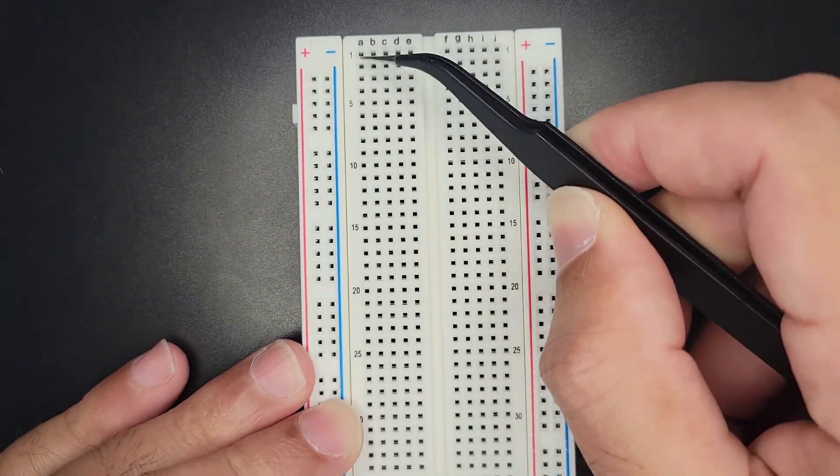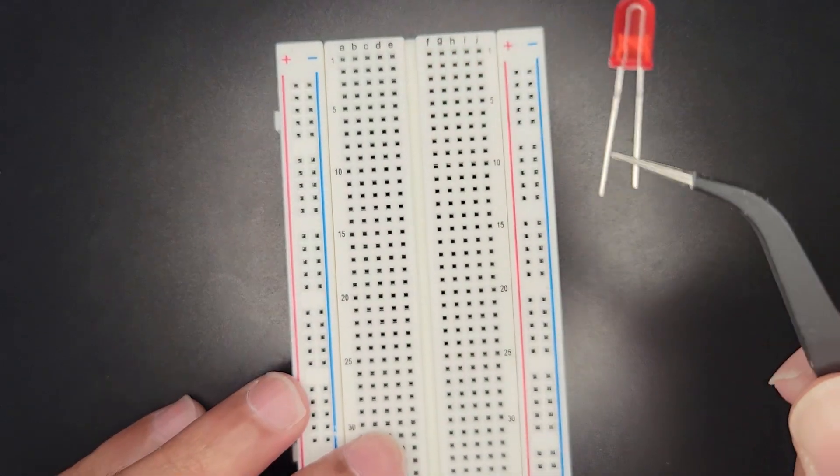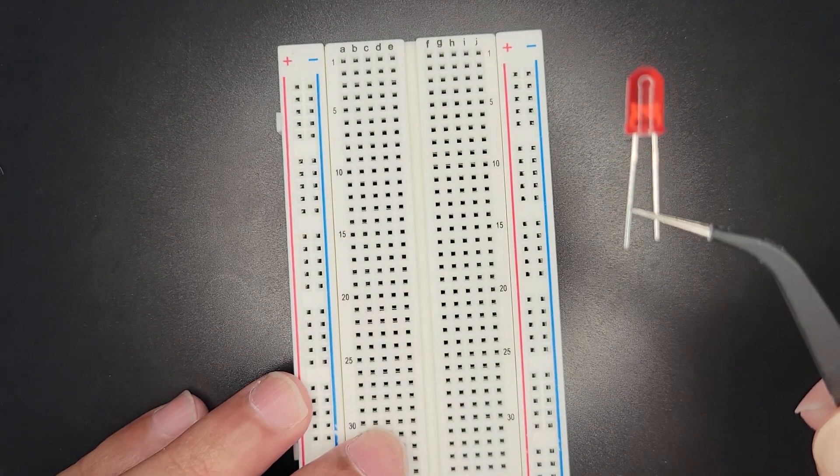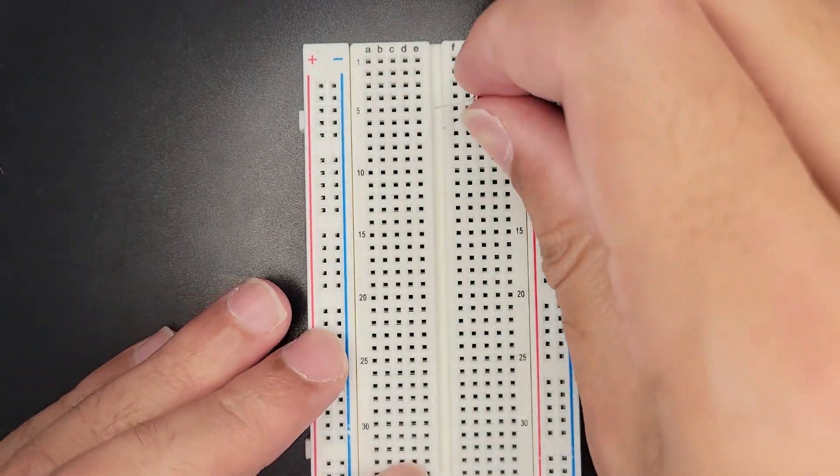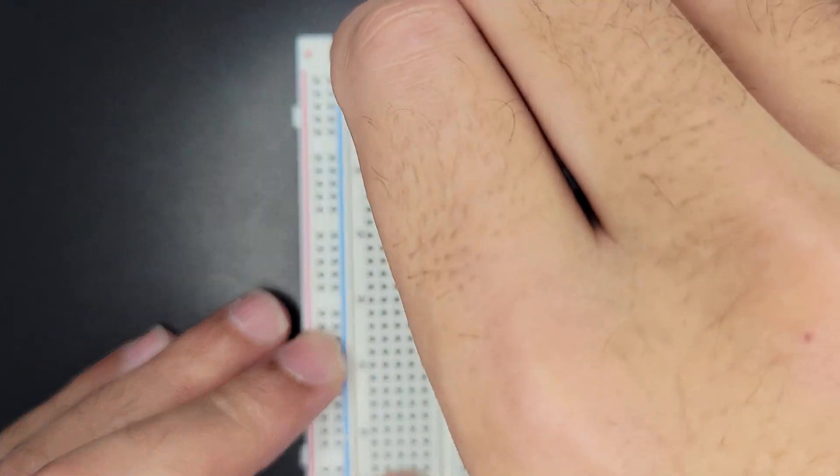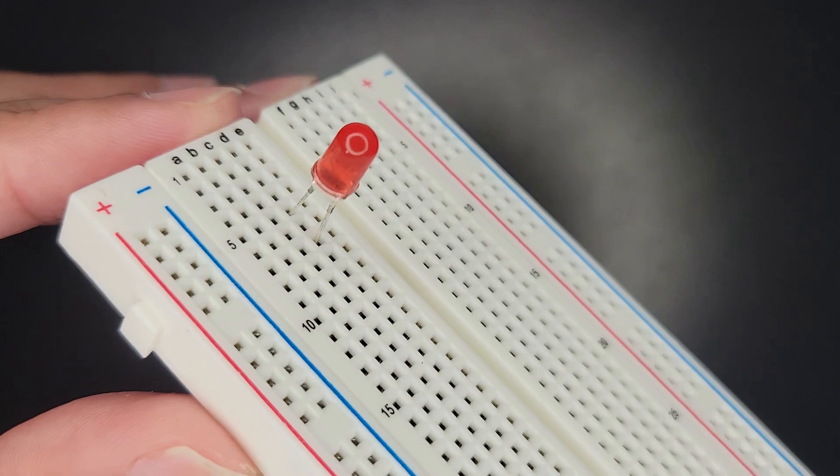And then over here we have our rows where our components will go, like our LED. So let's look at our LED and we can identify the long side as the left side. I'm going to put that into row five. So this plugs into row five and the negative probe or the short probe is in row seven.